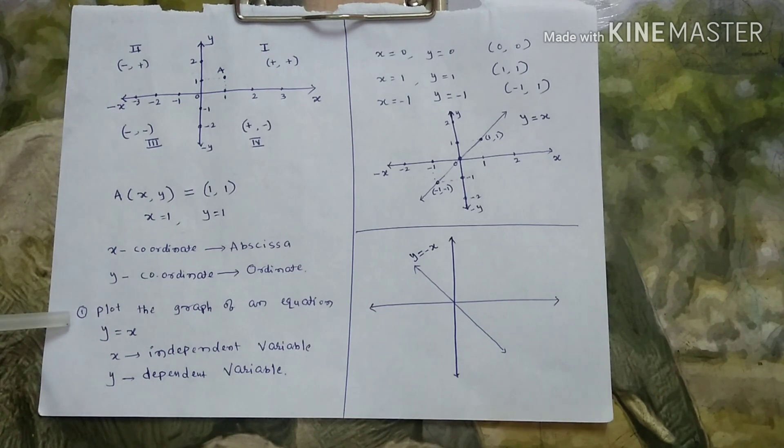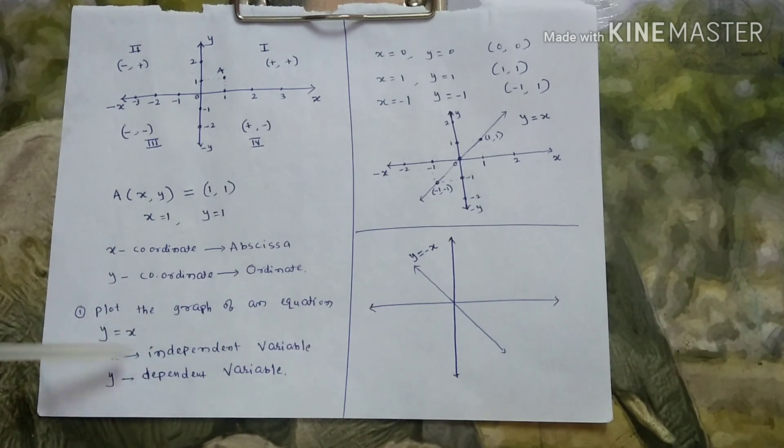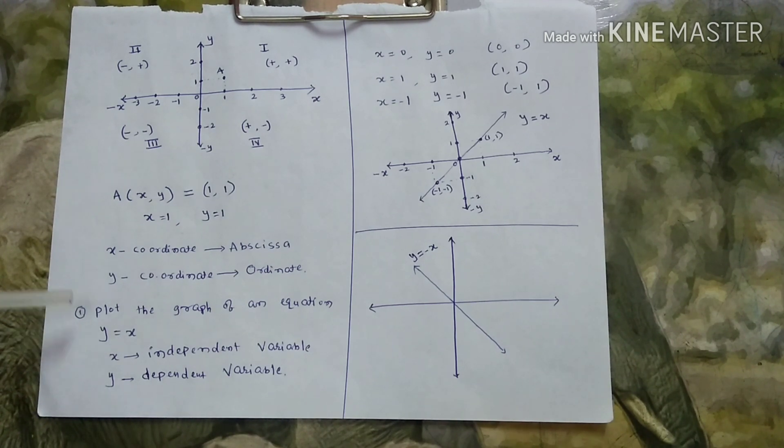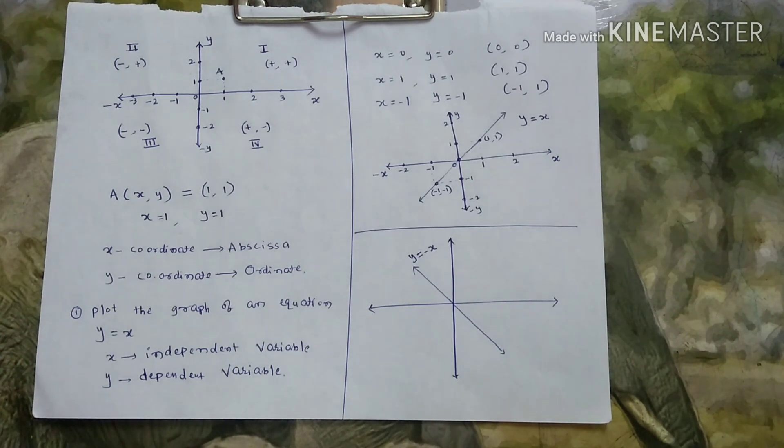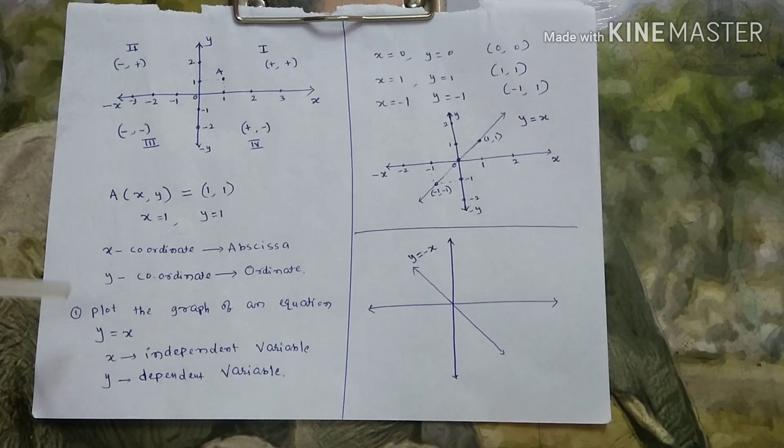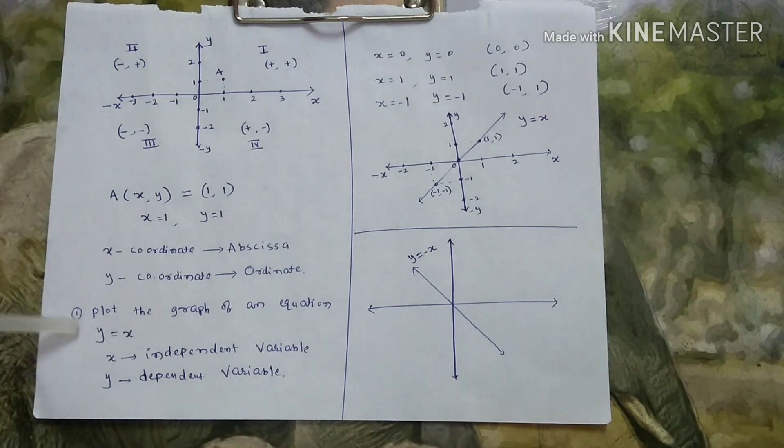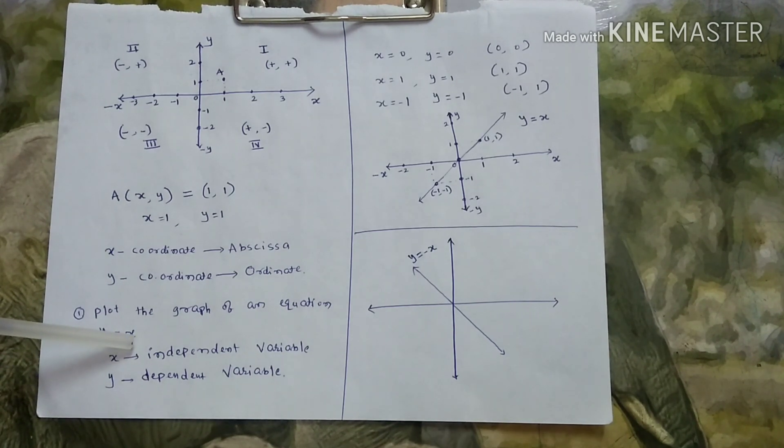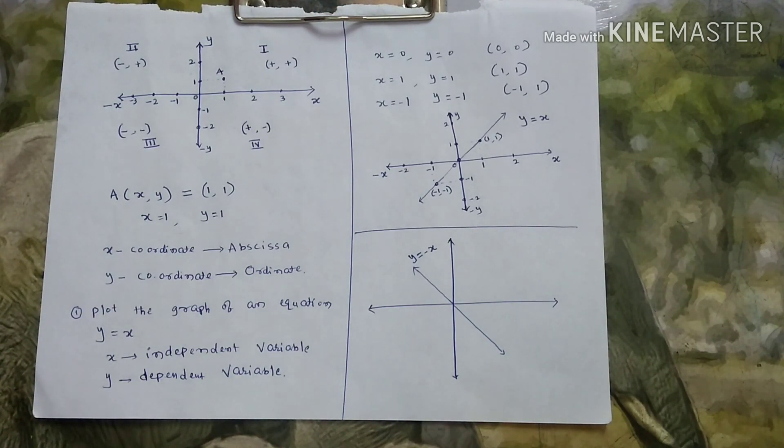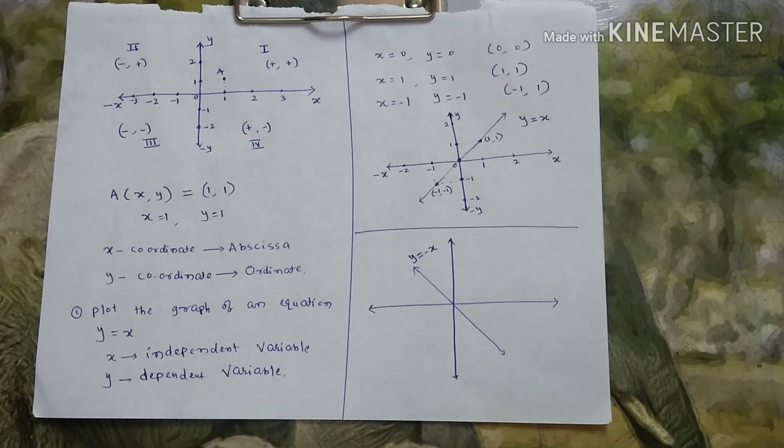Now, we will plot the graph. You see here, plot the graph of an equation y equal to x. This is relation between the x-coordinate and y-coordinate. You take any point, there may be a relation between x-coordinate and y-coordinate. That is called a graph. If there are set of points, more than 1, 2, 3, 4. Then, you will have an equation. Y equal to x means x is independent variable. Variable means it will change continuously. X is independent. X is taking its values independently. That is why x is called independent variable.